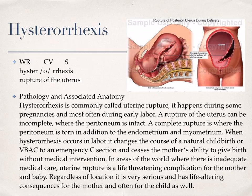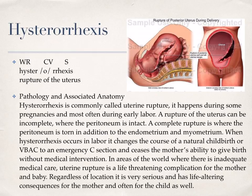Our third medical condition is hysterorexis, comprised of a word root, a combining vowel, and a suffix, which means rupture of the uterus. Hysterorexis is commonly called uterine rupture. It happens during some pregnancies and most often during early labor. A rupture of the uterus can be incomplete, where the peritoneum is intact, or a complete rupture, where the peritoneum is torn in addition to the endometrium and the myometrium. When hysterorexis occurs in labor, it changes the course of natural childbirth or VBAC to emergency C-section, and ceases the mother's ability to give birth without medical intervention. In areas of the world where there is inadequate medical care, uterine rupture is a life-threatening complication for the mother and baby, and has life-altering consequences regardless of location.